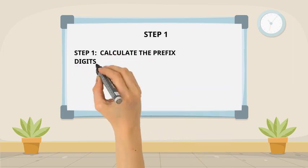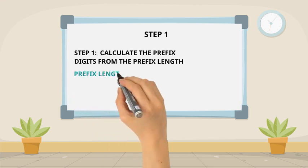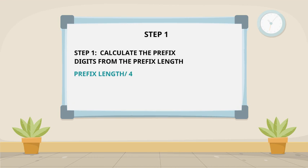The first step is to look at the prefix length, which is the slash with the value, and calculate the prefix digit from this. To carry this out, you need to divide that prefix length by four.